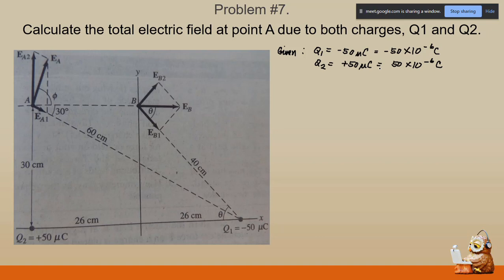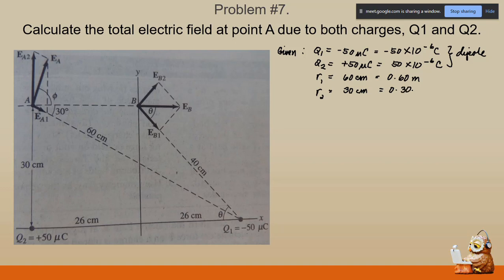These types of charges are called dipoles. The distance between point A and q sub one is sixty centimeters, or 0.60 meters. The distance between point A and q sub two is thirty centimeters, or 0.30 meters. We have no other given values aside from the angles, which we will use later during the determination of our vector components.